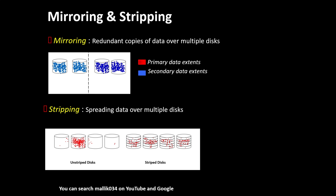Mirroring and striping: mirroring is keeping a duplicate copy of your data. If one disk has data A and the same data A is mirrored to another disk, if the first disk fails you still have the mirrored copy. Similarly data B is copied to another disk. If one disk goes down or crashes, your data is still available on the mirrored disk.